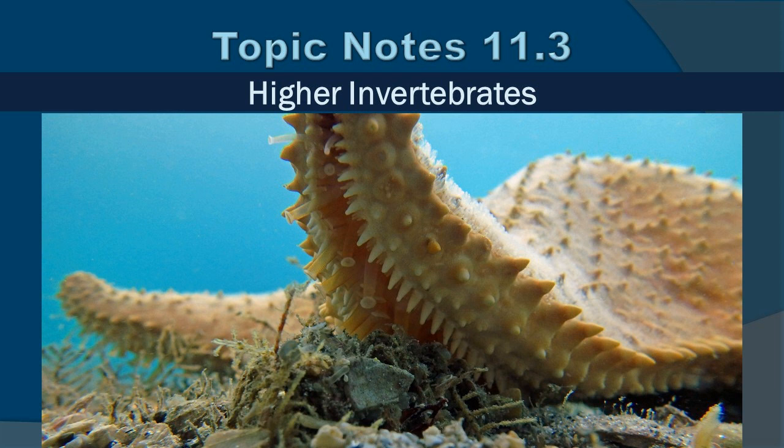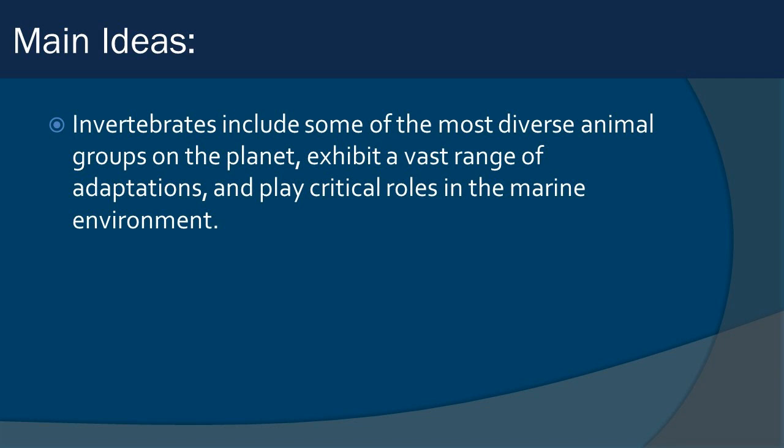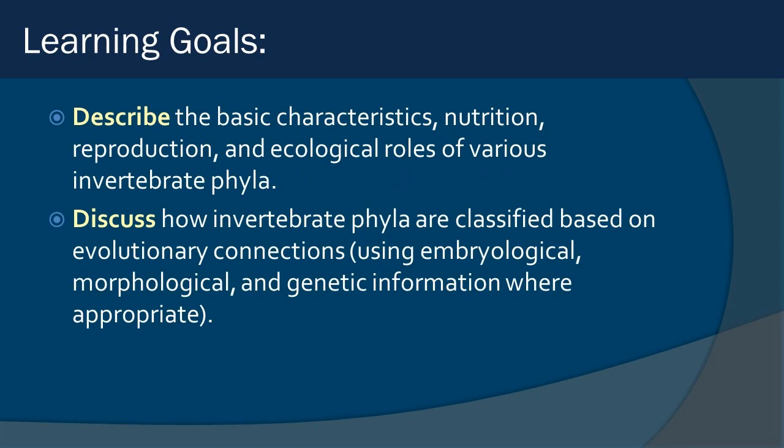Now we're going to get into a little bit more complex invertebrates. Our main ideas here are that invertebrates include some of the most diverse animal groups on the planet. They exhibit a vast range of adaptations and play critical roles in the marine environment. Along the way, you should be able to describe their basic characteristics, nutrition, reproduction, and ecological roles in various different invertebrate phyla. You should also be able to discuss how invertebrate phyla are classified based on evolutionary connections. We're going to go through a lot of information, but those are the key components to hold on to.